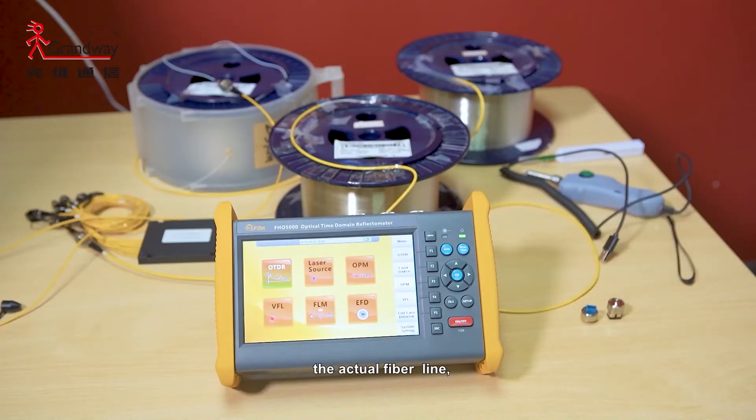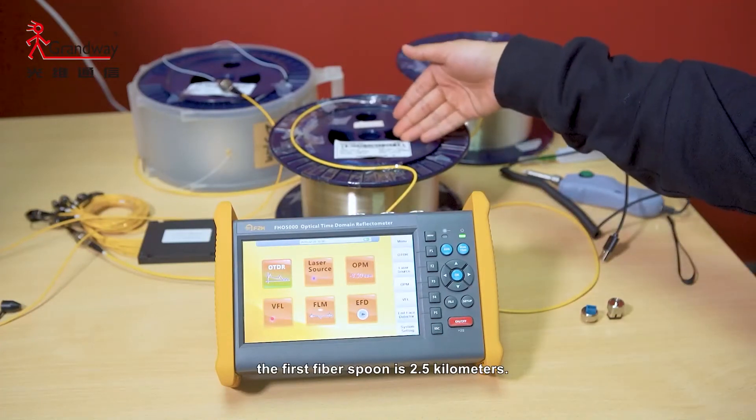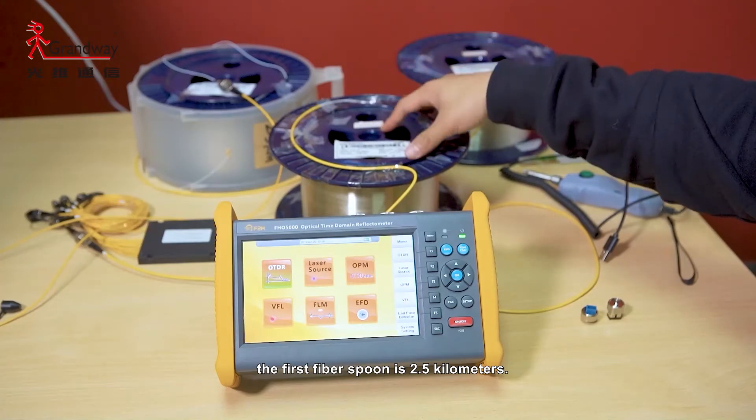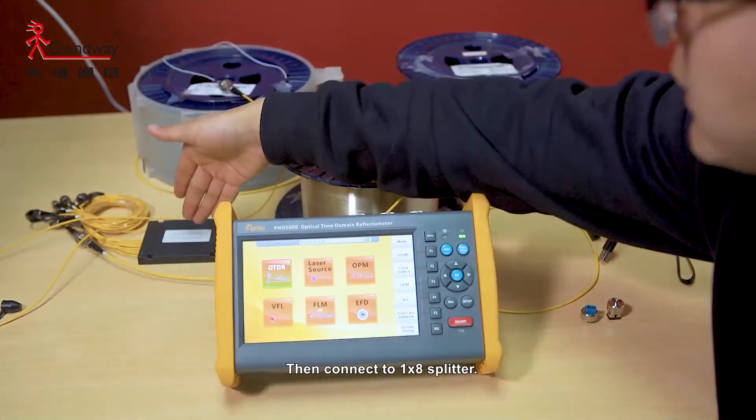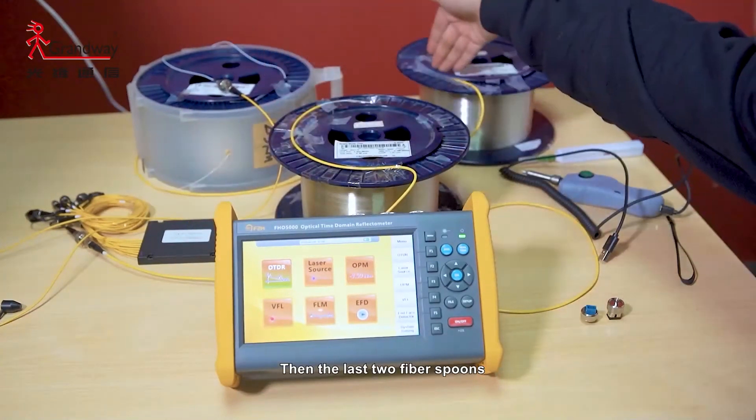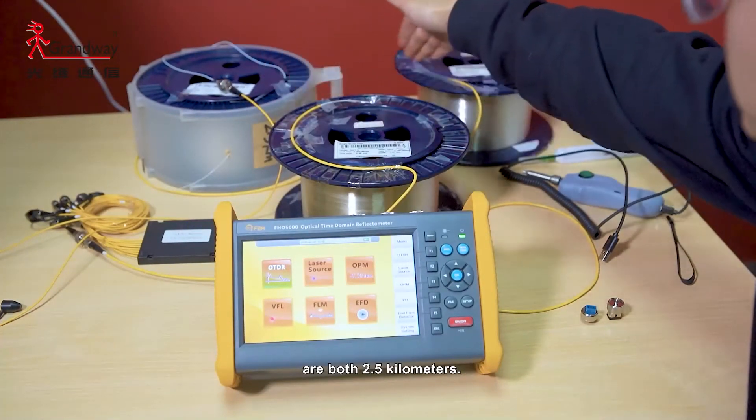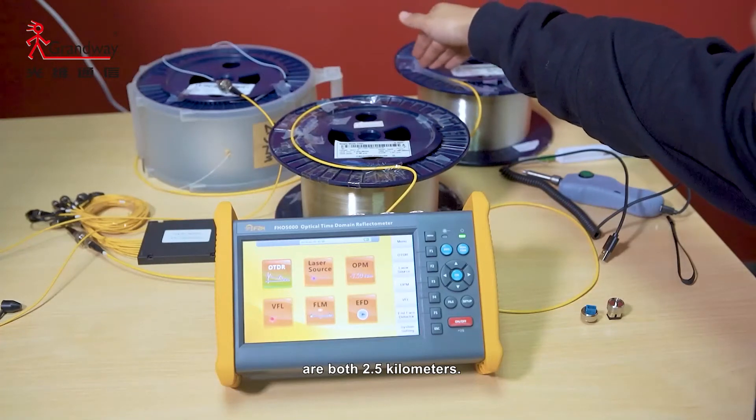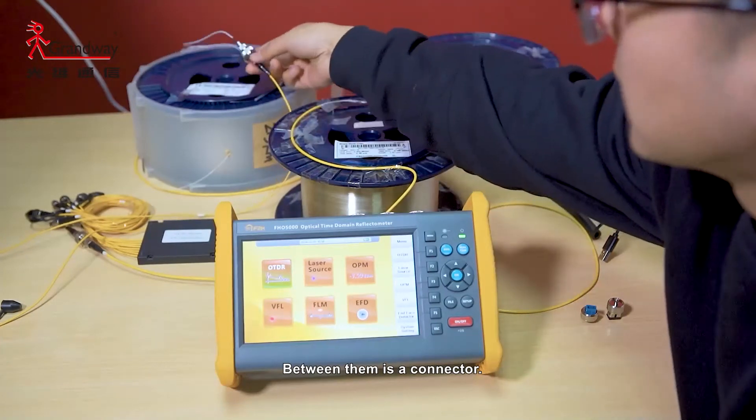The actual fiber line: the first fiber spool is 2.5 kilometers, then connect to 128 splitter. Then the last two fiber spools are both 2.5 kilometers. Between them is the connector.